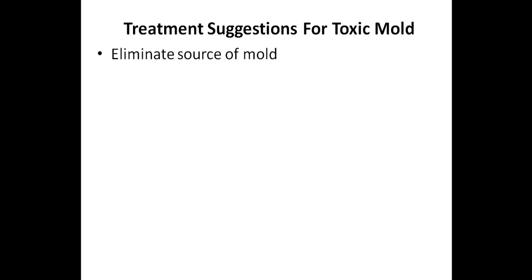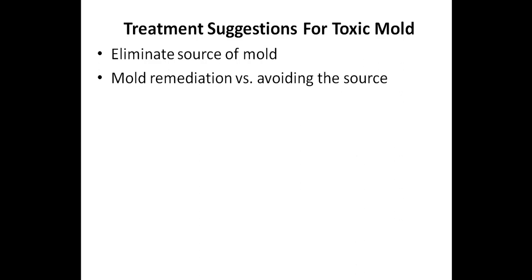Let's now talk about some of the different treatment options for toxic mold. Of course, you want to eliminate the source of the mold — this is the most important thing that needs to be done, as if you skip this step, you will not get rid of the mold toxicity. Before eliminating the source, you need to confirm that there is a mold problem either at home, at work, or at school. Once this has been confirmed, the next step is usually either mold remediation or doing everything you can to avoid the source.